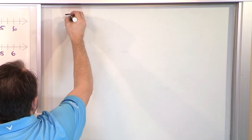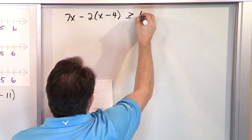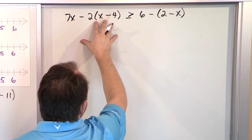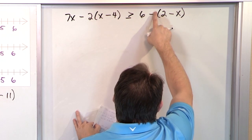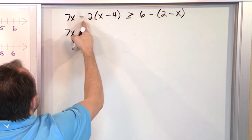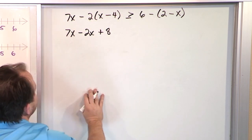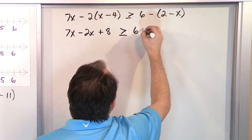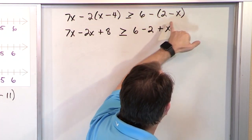Next: 7x minus 2 times (x minus 4), greater than or equal to 6 minus (2 minus x). We can distribute the 2 in here. And the trick on the right side is that the negative really is a negative 1 — there's an invisible 1 out front. So we'll distribute negative 1 into the parentheses. Negative 2 times x is negative 2x. Negative 2 times negative 4 is positive 8. Then: 6, negative 1 times 2 is negative 2, and negative 1 times negative x is positive x.